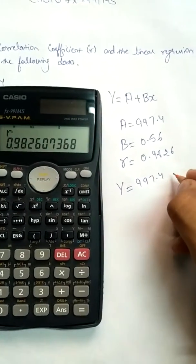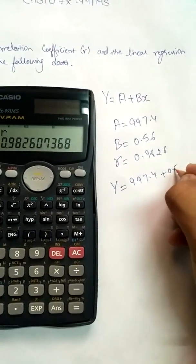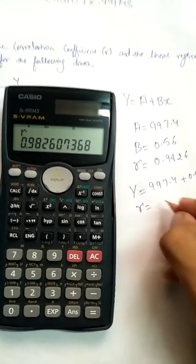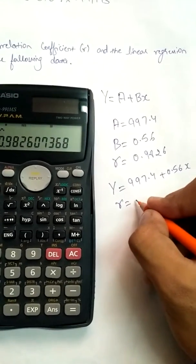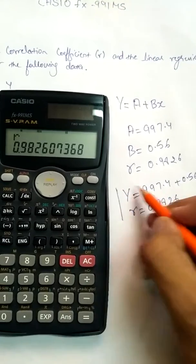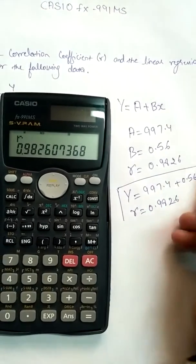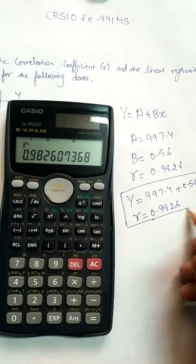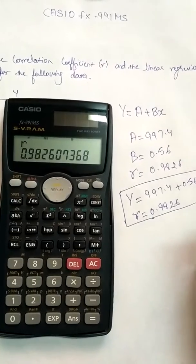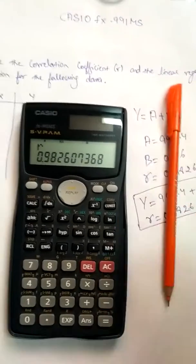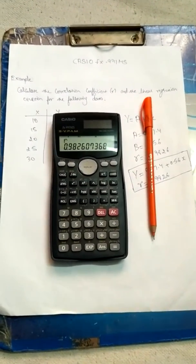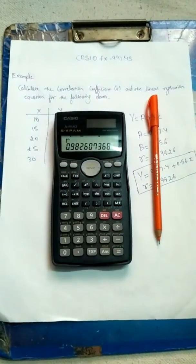So the regression equation is y equals 997.4 plus 0.56x, and r equals 0.9826. If you like the video, give it a thumbs up. Thanks for watching.